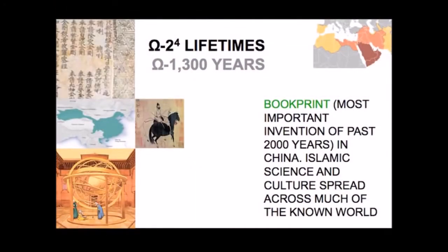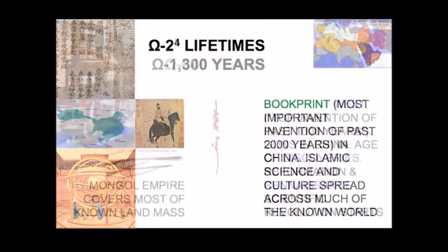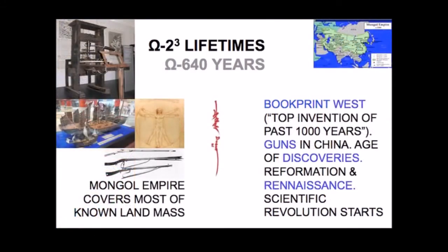Take half of that and it's exactly the golden age of the Islamic world, and at the same time the most important invention of the past two thousand years took place: the invention of book printing in China, approximately 1,300 years before Omega.